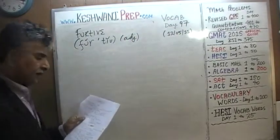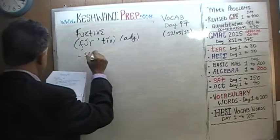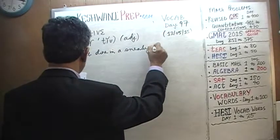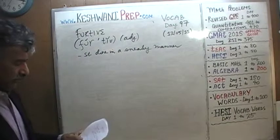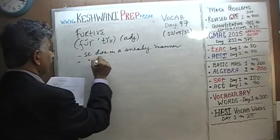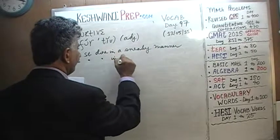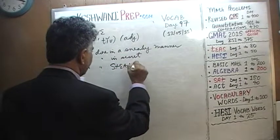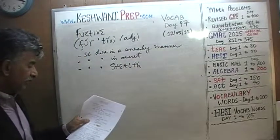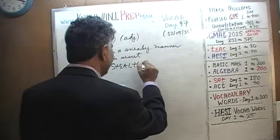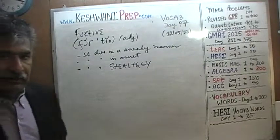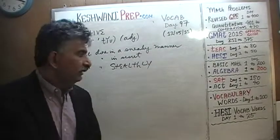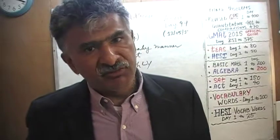It's an adjective, and as I said, it means something that is done in a sneaky manner — something that is done in secret, secretly, in an underhanded manner. Stealth is the related noun. The adverb would be stealthily. If you do something stealthily, that means you're doing it secretly — surreptitiously. Oh, here's a good word: surreptitiously. Something that is done surreptitiously.